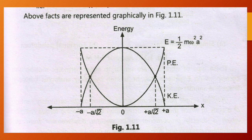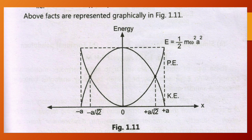The figure shows the graphical representation of kinetic energy and potential energy. At x = 0, potential energy is zero but kinetic energy is maximum. At x = ±A, both kinetic energy and potential energy are considered. At x = ±A/√2, both kinetic energy and potential energy are equal.